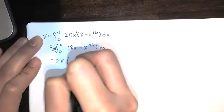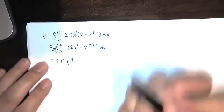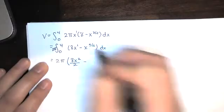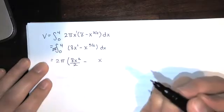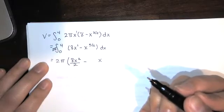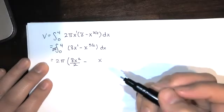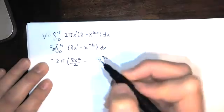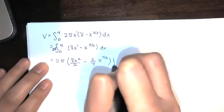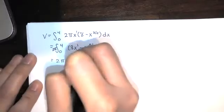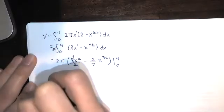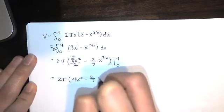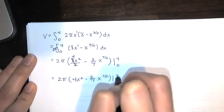Bring the 2 pi down. Bring the 8 down. And then for this one, we're going to use the power rule. So you want to add 1 to the exponent and divide by the new exponent. Over here, we want to use the power rule as well. Add 1 to the exponent. 5 halves plus 1, which is 2 over 2. 5 halves plus 2 over 2 is 7 halves. Divide by the new exponent. Dividing by 7 halves is multiplying by 2 sevenths. And then you want to evaluate from 0 to 4. Of course, 8 divided by 2 is 4. So we've got 2 pi times 4x squared minus 2 over 7 times x to the 7 halves evaluated from 0 to 4.